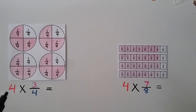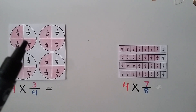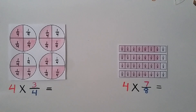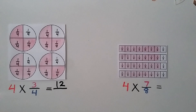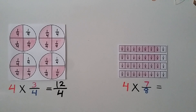Here we have 4 times 3 fourths. We have 4 circles, and there are 3 fourths in each circle. We multiply the whole number by the numerator: 4 times 3 is 12. And we put it over that same denominator, 4. We can write this in simplest form by doing 12 divided by 4, which is equal to 3. So 4 times 3 fourths equals 12 fourths, which equals 3 whole.